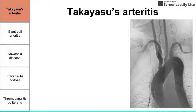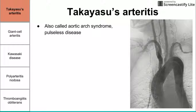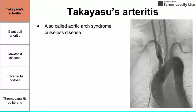Let's start with Takayasu's Arteritis. This disease is also called aortic arch syndrome and pulseless disease, and both of those describe the location where this most affects the arteries, as well as one of the symptoms — pulselessness — since the subclavian artery is usually blocked off, causing a person to not have a pulse.